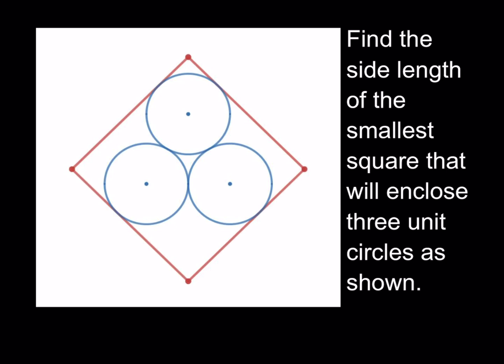Now, we do have a square, the side length of the smallest square that will enclose three unit circles as shown. Of course, this is without overlap, right? We do have three unit circles that are enclosed in a square of smallest side length. And we're going to find the side length for this square. So let's go ahead and get started.